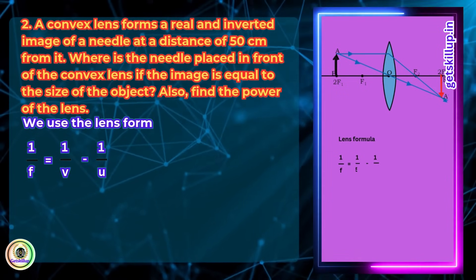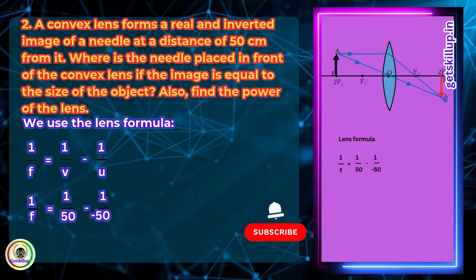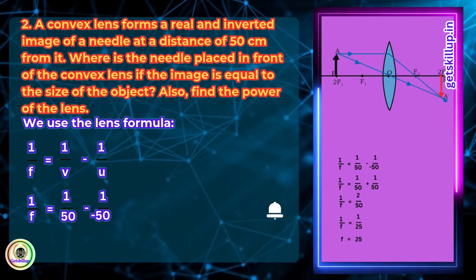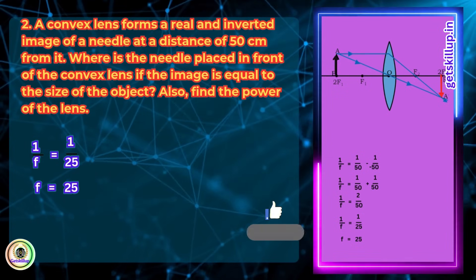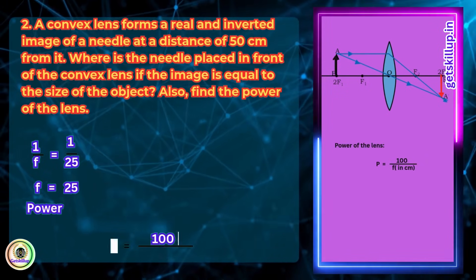1/f = 1/50 - 1/(-50) = 2/50. So the focal length is 25 cm. Power of the lens P = 100/f (in cm)